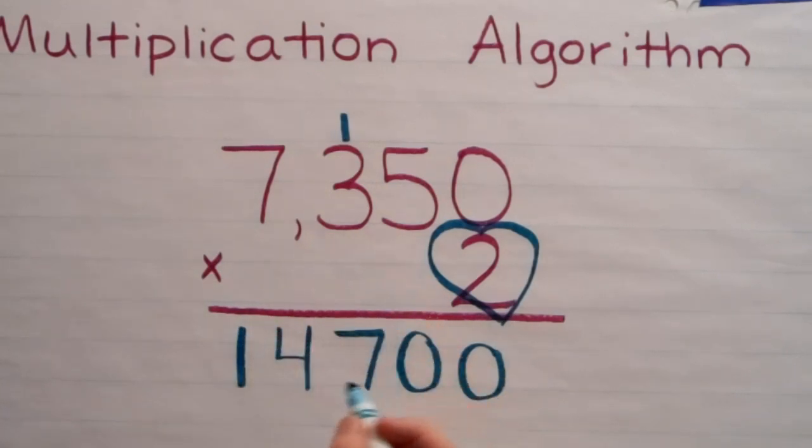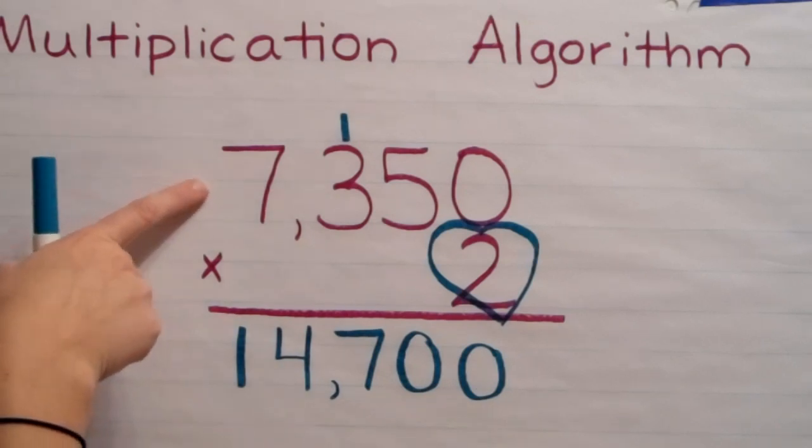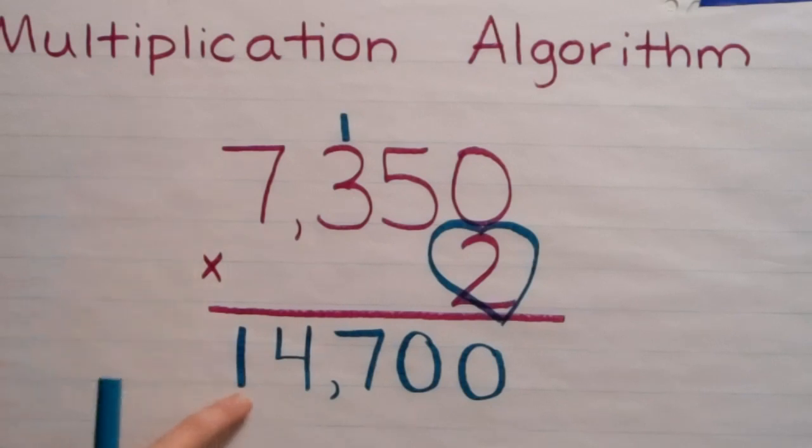And then I'm going to go back and put my comma between the thousands and the hundreds. And the product of seven thousand three hundred fifty times two is fourteen thousand seven hundred.